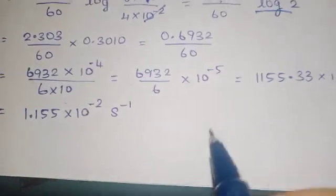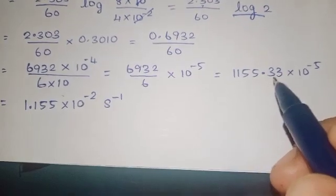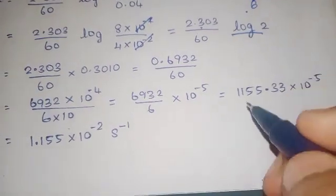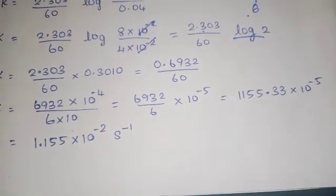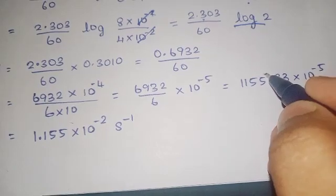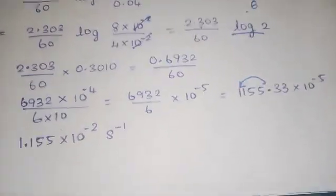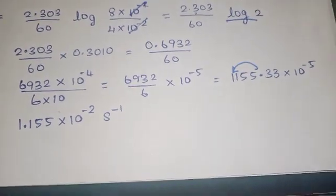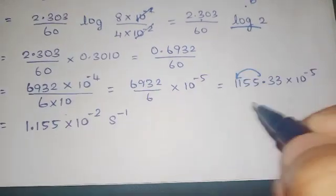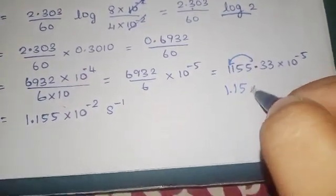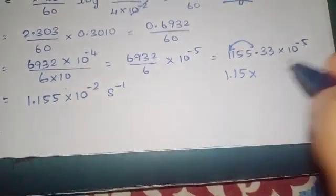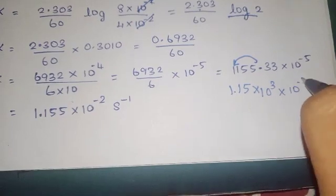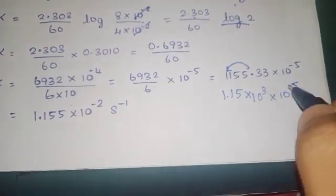Dividing the numbers, we get approximately 1.155. Moving the decimal and adjusting powers, we go from 10⁻⁴ to 10⁻⁵, adding 3 digits. So 3 minus 5 gives the final power adjustment, yielding 1.155 × 10⁻² s⁻¹.